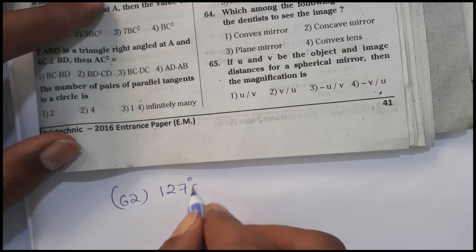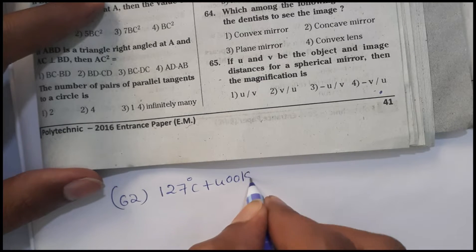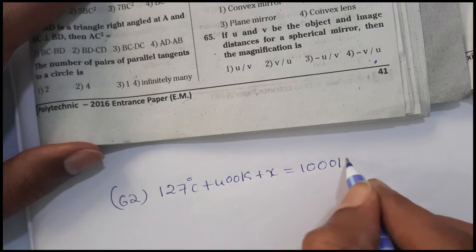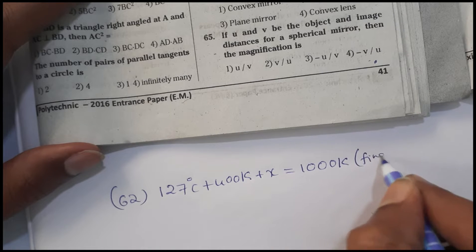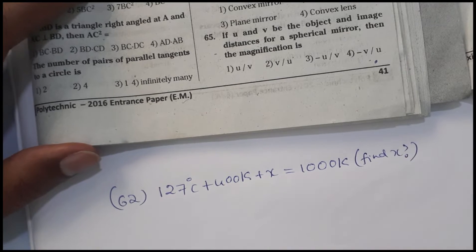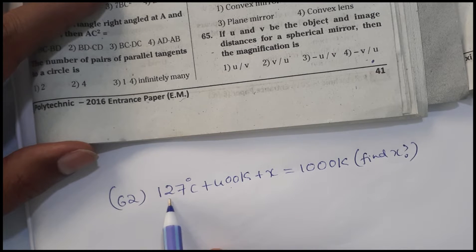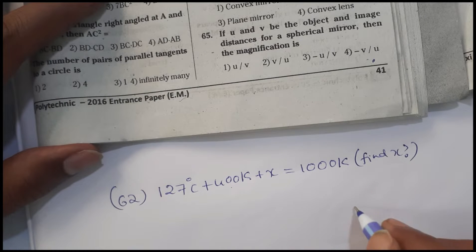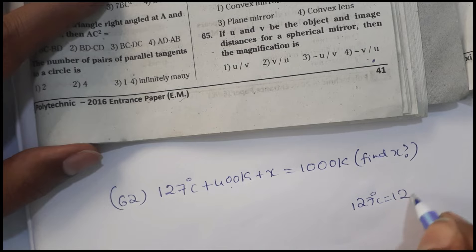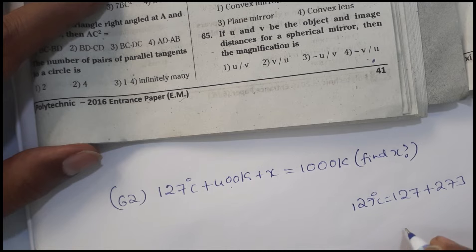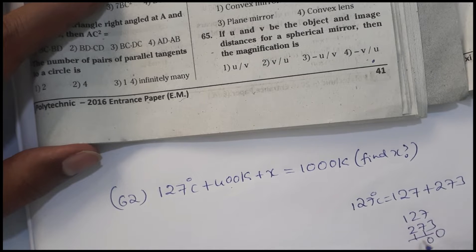To solve this, we convert all values to Kelvin. The formula for converting degrees Celsius to Kelvin is C plus 273. So 127 degrees Celsius equals 127 plus 273, which equals 400 Kelvin.